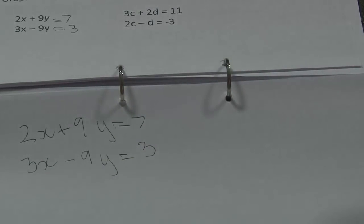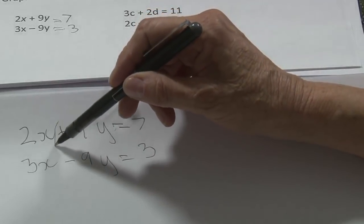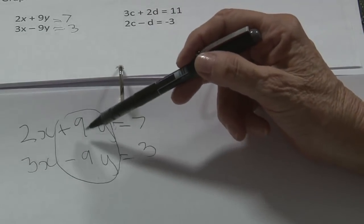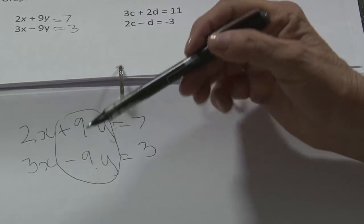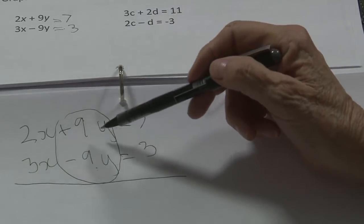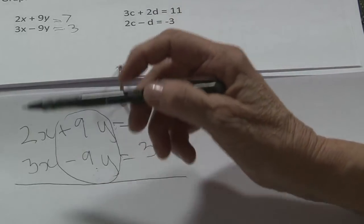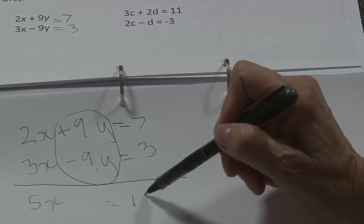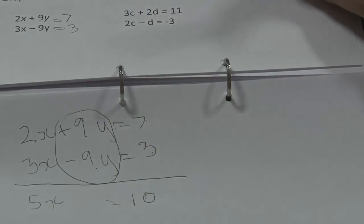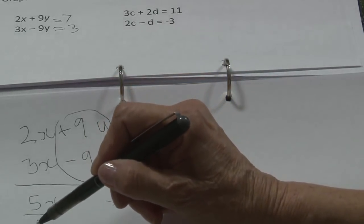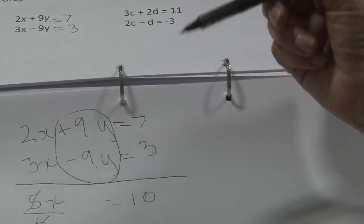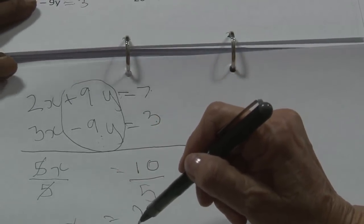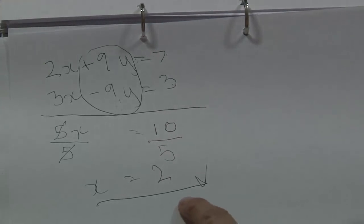Now I want to get rid of one of them. If I have 9 sweets and I eat 9, I have no more sweets. So I'm going to cancel it — 9 minus 9 is nothing. I'm going to eliminate the y. So 2 plus 3 gives me 5x, and 7 plus 3 gives me 10. Just like we did with the equations, I have to get x on its own: divide by 5 so that I can cancel. What I do on this side I do on this side. So x is equal to 2.